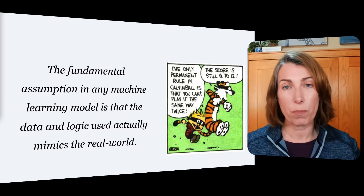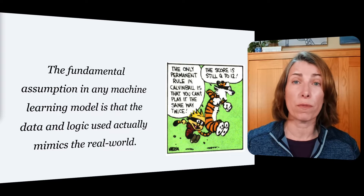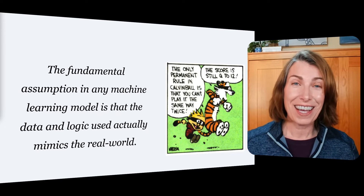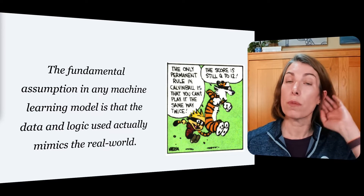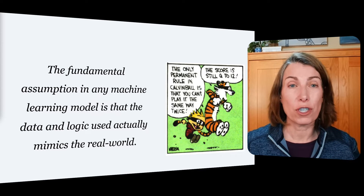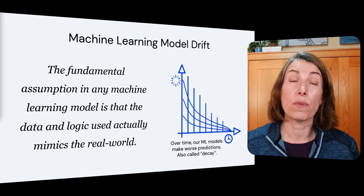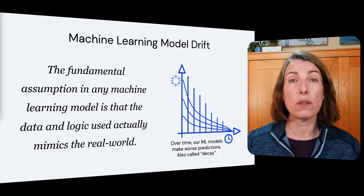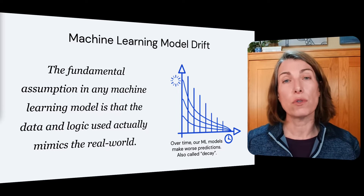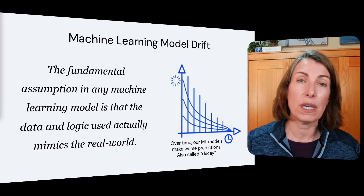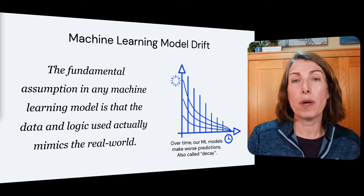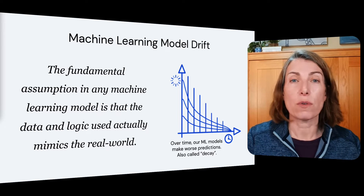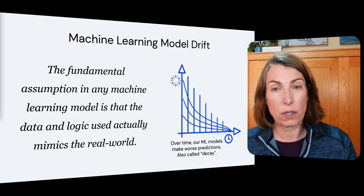The pandemic is a perfect example. People are shopping more for yoga pants versus dress pants during that time frame, so our predictions changed — or rather they became less accurate. Machine learning model drift, very simply put, just means that over time, our ML models drift away from accuracy and they make poor predictions.